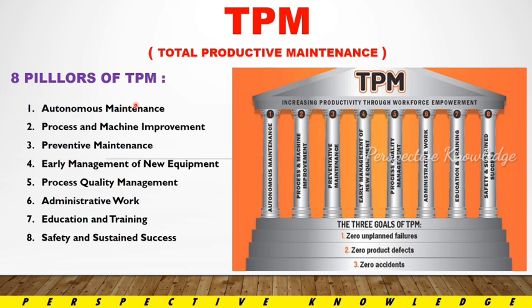If we look at the TPM pillars, we have to see 8 pillars. So all these are TPM pillars — 5S is important in TPM, one of the main pillars among the 8 pillars.